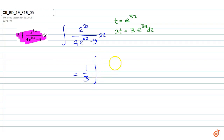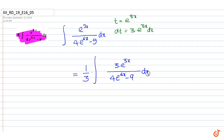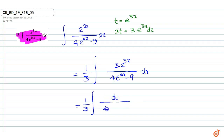...of 3 into e to the power 3x divided by 4 e to the power 6x minus 9 into dx. This is equal to 1 by 3 into integral of dt upon 4t squared minus 9.